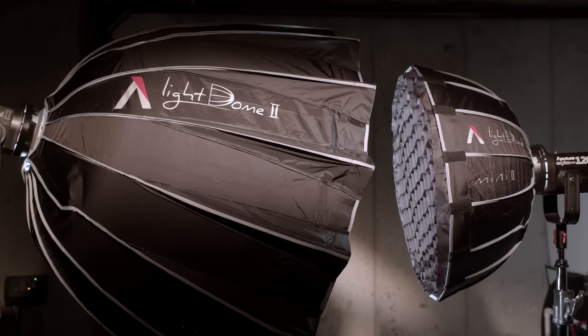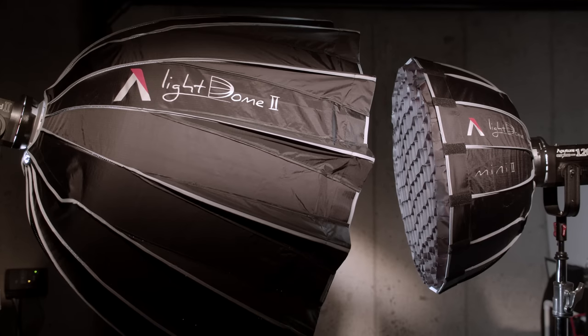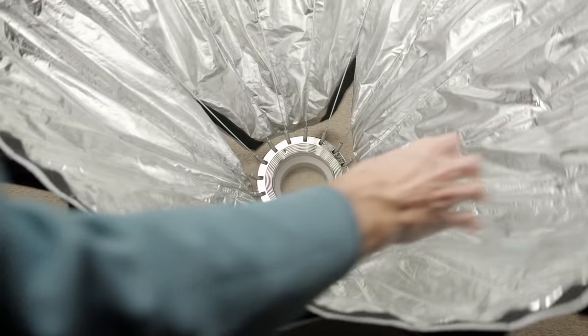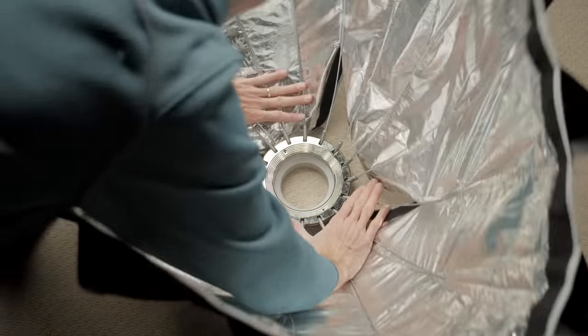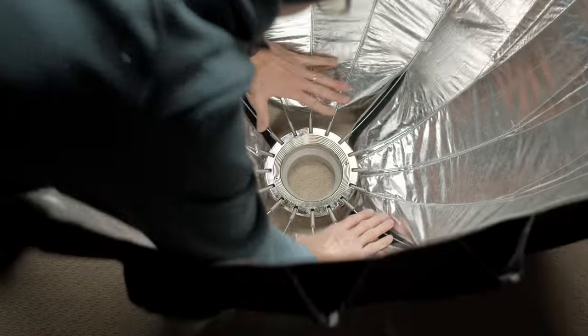Let's talk about some of the features and how it compares to the original versions of the Light Dome and the Light Dome Mini. First of all, the setup is significantly faster with the new Light Dome 2 and the Light Dome Mini 2. All you have to do basically is push all the spokes down until they lock into place and you're pretty much ready to go.